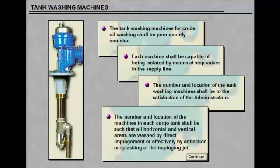The number and location of the machines in each cargo tank shall be such that all horizontal and vertical areas are washed by direct impingement or, effectively, by deflection or splashing of the impinging jet.